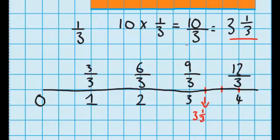Now let's double-check that by checking that our improper fraction fits at the same point on the number line. Well, if that's nine-thirds, this point here must be ten-thirds, which means that one would be eleven-thirds, and perfect — we're up to twelve-thirds here. So now we've just worked out where a mixed fraction and an improper fraction fit on a number line. I hope you found this lesson helpful. For more help, check out teachertools.co.nz.